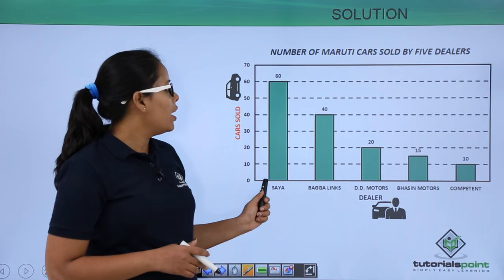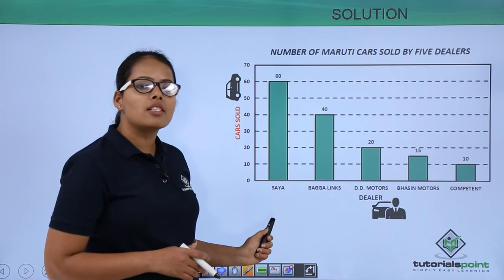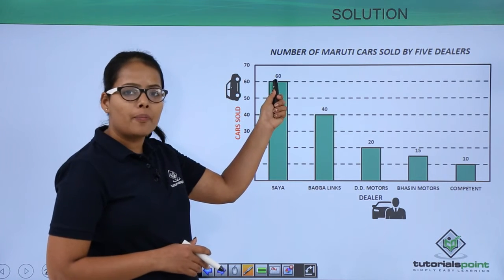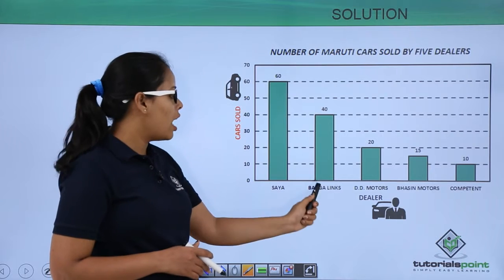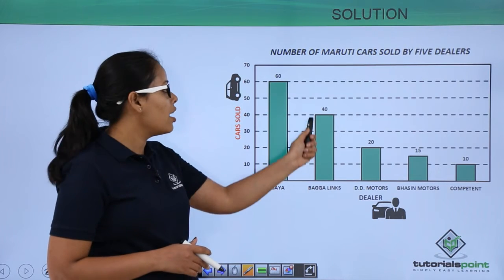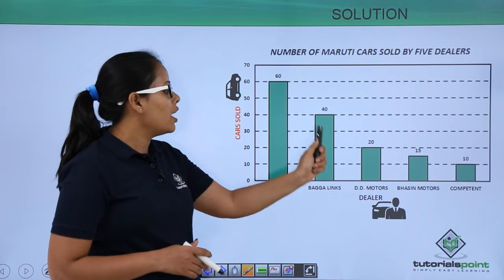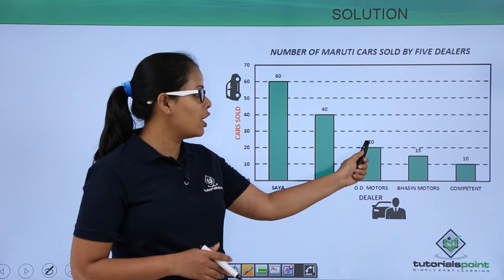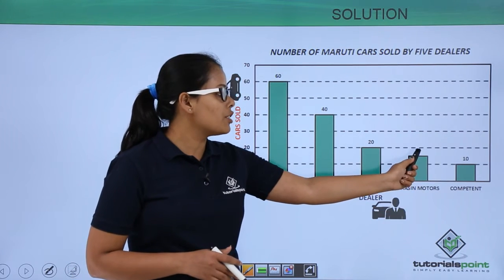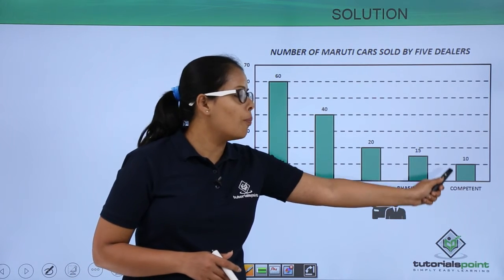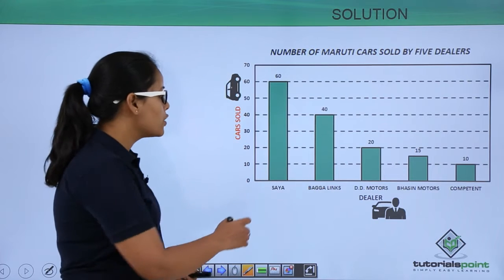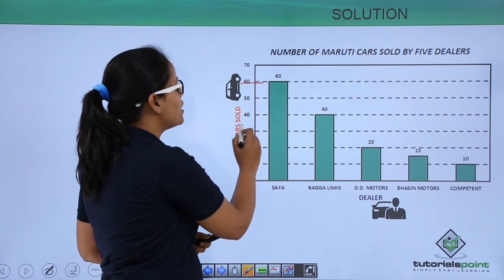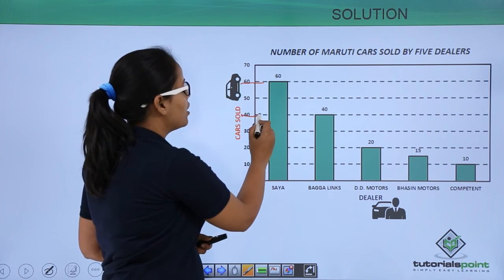On the bar graph, cars sold by Sia are 60, Bagga Links are 40, DD Motors are 20, Basin Motors 15, and Competent 10. These levels match with the corresponding levels as you can see in the graph.